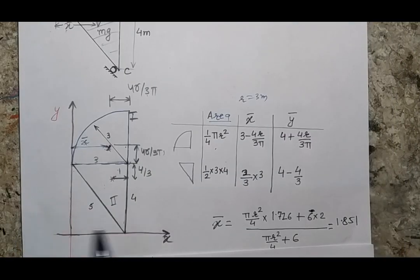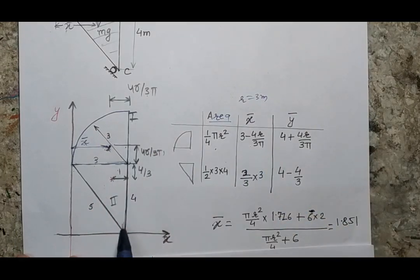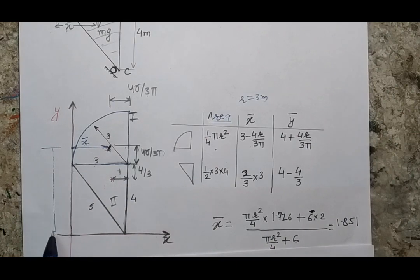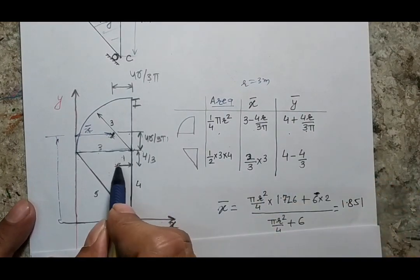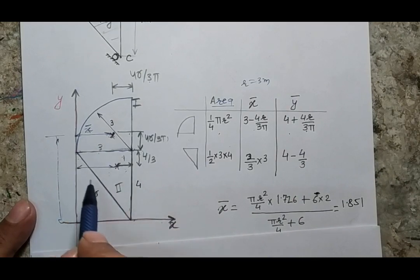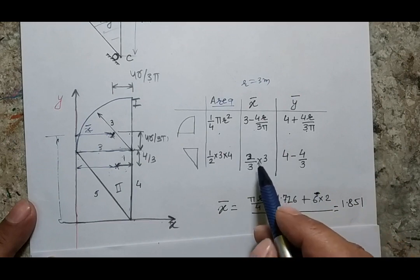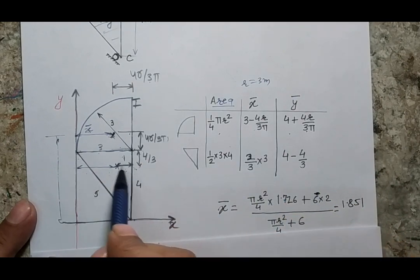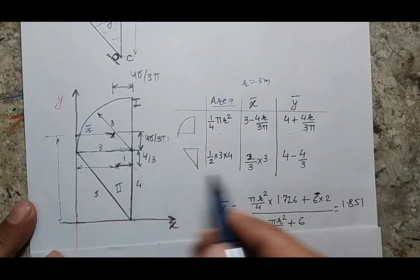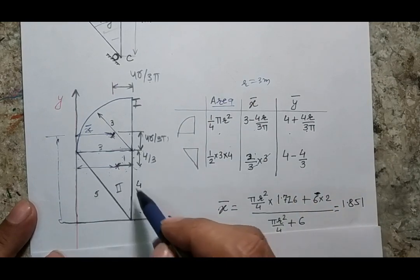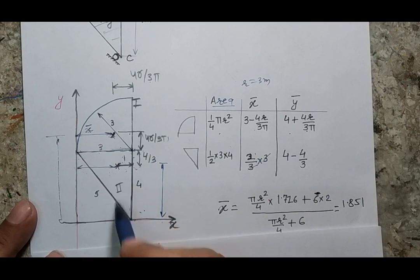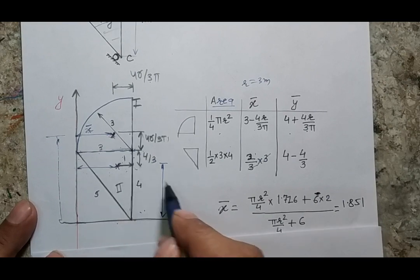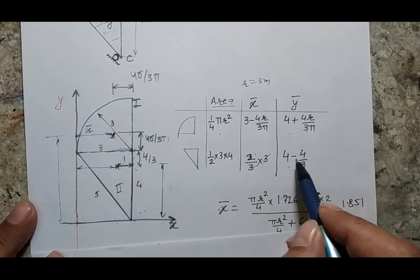For the quarter circle, the vertical position of the centroid will be 3 minus 4r/3π. Similarly, the x-position of the centroid for the quarter circle will be the total distance: 4 plus 4r/3π. For the triangle, the x-position will be 3 minus 1, which equals 2, and the vertical position will be 4 minus 4/3, since the centroid is at two-thirds of the total height.